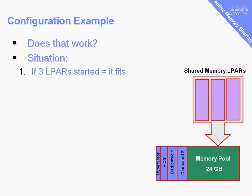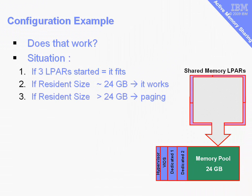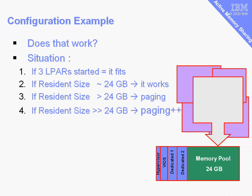There are a couple of situations to consider. If we only start three of the logical partitions, then everything fits and we don't have to do much with AMS. If we start all four and the resident set is roughly 24GB — the size of the memory pool — then everything fits in the pool and works fine. If we go slightly over the size, the resident set being slightly larger than the physical memory, then we're going to have to do some paging — and we know from the five golden rules how to make paging work well. If we go well over the size of the memory pool, we're going to get into serious paging difficulties, and we'll look at various things we can do to help solve that problem.